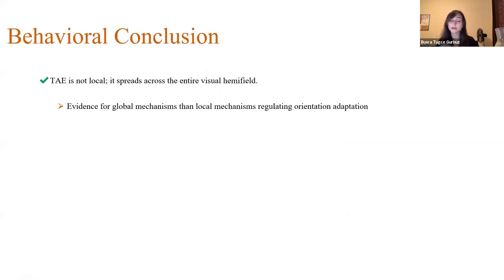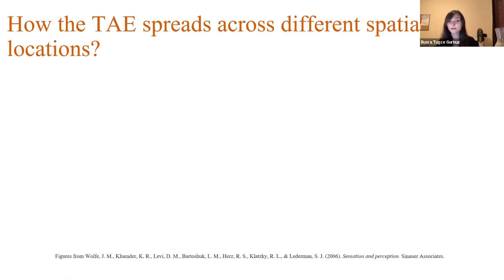So our behavioral conclusion from our behavioral studies is that tilt after effect is not a local after-effect. It spreads across the entire visual hemifield and it shows some evidence for global mechanisms than local mechanisms regulating the orientation adaptation. And as you might guess, our next question was how the tilt after effect spreads across the different spatial locations. And we investigate this question through modeling.